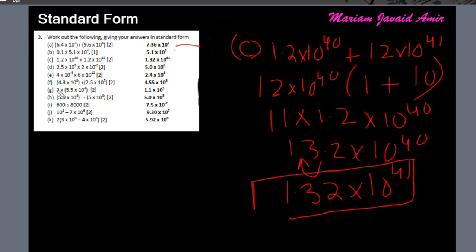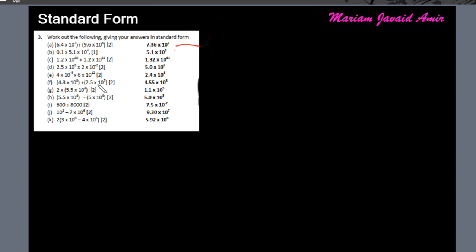The rest of the question 3 parts are pretty much the same. All you need to do is insert these values in the calculator to get the answer directly. If the question asks for working, you show this type of factoring method. For example, you could change 2 × 5.5 to 11 × 10⁴ and then convert to 1.1 × 10⁵, but simply entering the values in the calculator will do.